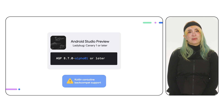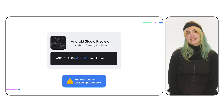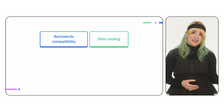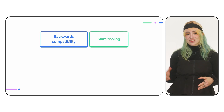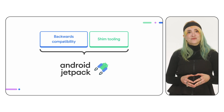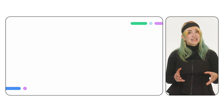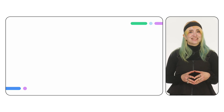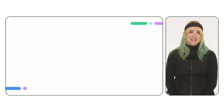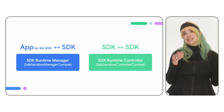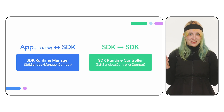This includes a backward compatibility fix connected to Kotlin coroutines. Backward compatibility, as well as shim generation, are enabled through a set of Android Jetpack libraries. Before listing these libraries, let's take a step back to understand their role. The SDK runtime introduces new entities to assist with inter-process communication: the SDK manager, used from the app's process, and the SDK controller, used within the runtime.